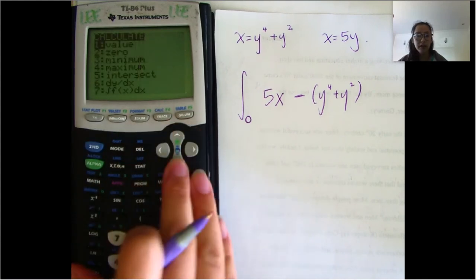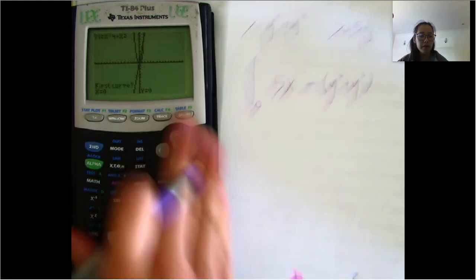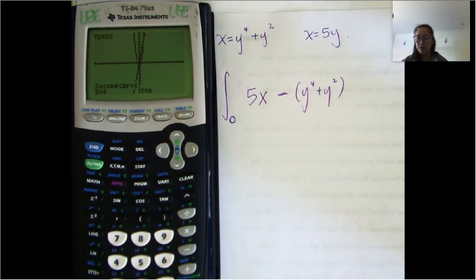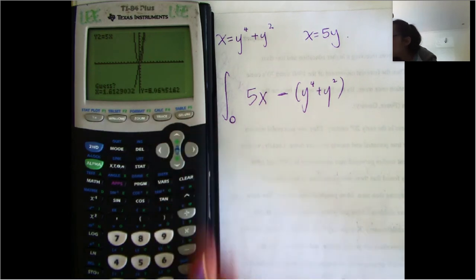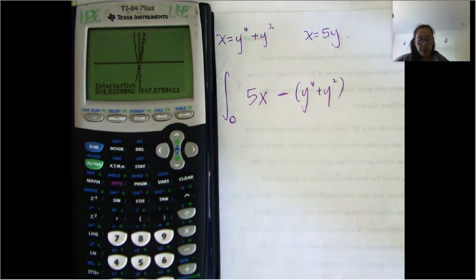So we'll go ahead and find that other intersection point. Hit second calc, then go down to intersect. First curve — press enter, second curve — press enter again. Get close to it, press enter, and it gives you 1.516.